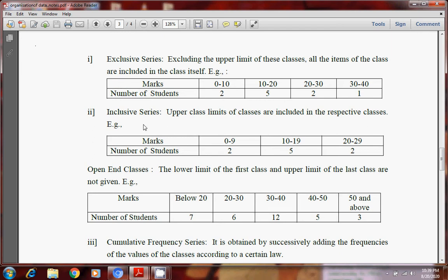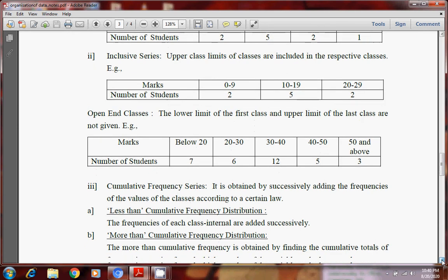And what is inclusive series? Inclusive series means upper class limit of classes are included in the respective classes. How? Like 0 to 9. Means 9 will be included here. The next will start from 10. 10 to 19. Then 20 to 29. So this is exclusive series. This is inclusive series. It is quite important. Like it can come in theoretical question as well as. Questions can also come based on this.